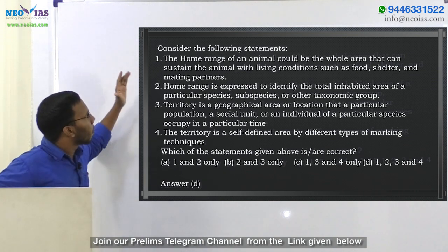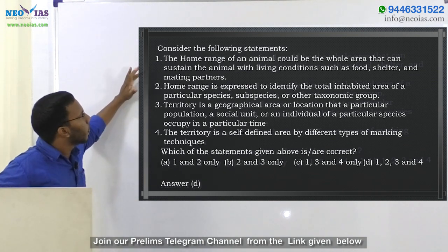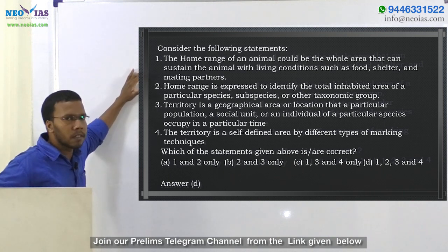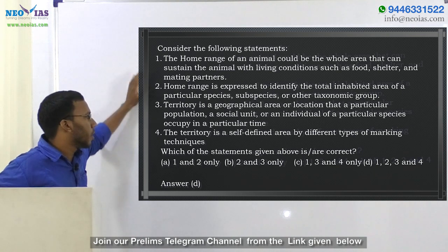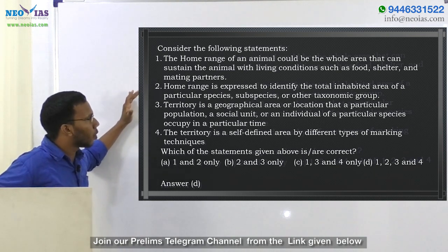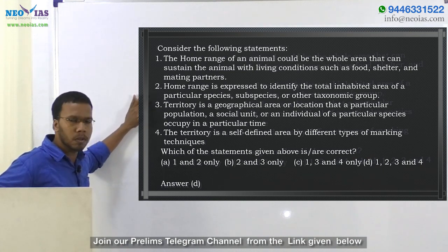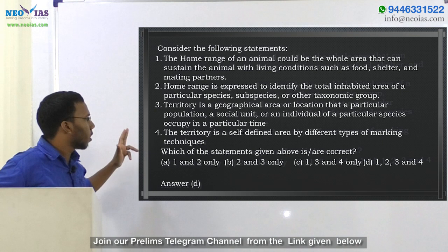Coming back to the question: the first statement — home range could be the whole area that can sustain the animal with living conditions such as food, shelter, and mating partners — is correct, so we eliminate option B. The second statement — home range is expressed to identify the total inhabited area of a particular species, subspecies, or other taxonomy group — is also correct, since home range is defined for the entire species, so we eliminate option C as well.